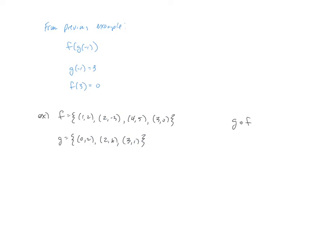Similar to how we handled transitioning from continuous to discrete with arithmetic of functions, we're going to do the same thing now with composition of functions. There are a couple of things to pay close attention to. We start with an x value of negative 1, which maps to a y value of 3. To continue the problem, the y value becomes the x value for the next step, which then maps us to another y value. In the last type of problem, we were looking for common x values — here, we're looking for a common link, meaning the y coordinate becomes the x coordinate in the next step.